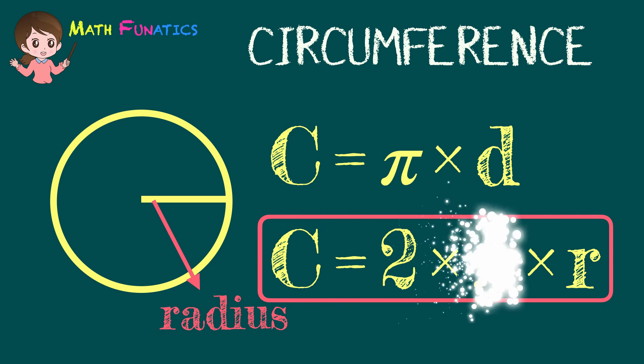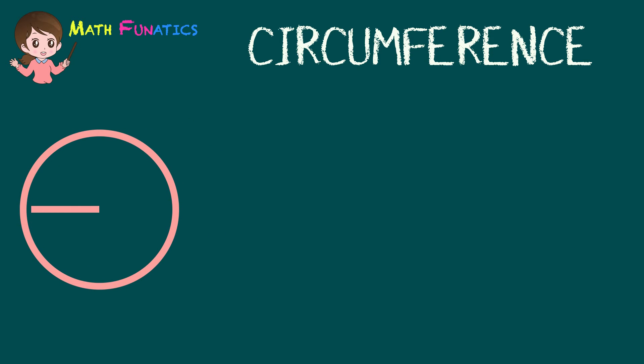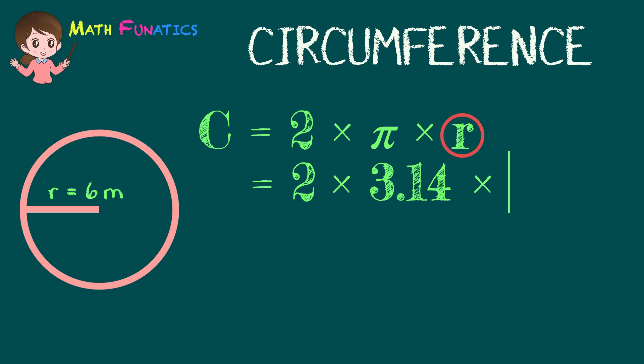Let us have some examples. What is the circumference of a circle if its radius is equal to 6 meters? So we use the formula C equals 2 times pi times R. First, we copy 2 from the formula. Then replace the pi by its value, which is 3.14. Next, replace R by 6 meters.